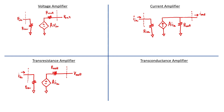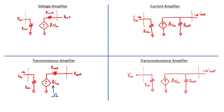In a trans-resistance amplifier, the input would be a current and the output would be a voltage. Therefore, A needs to have units of ohms. In a trans-conductance amplifier, the input would be a voltage and the output a current. The gain, A, in a trans-conductance amplifier would have units of inverse ohms.